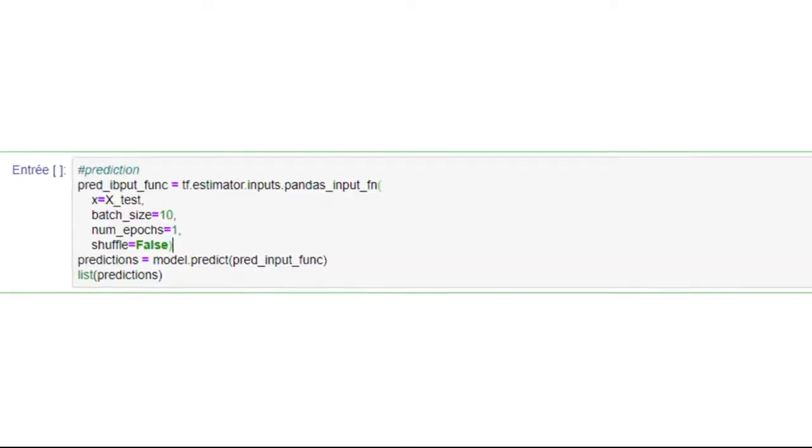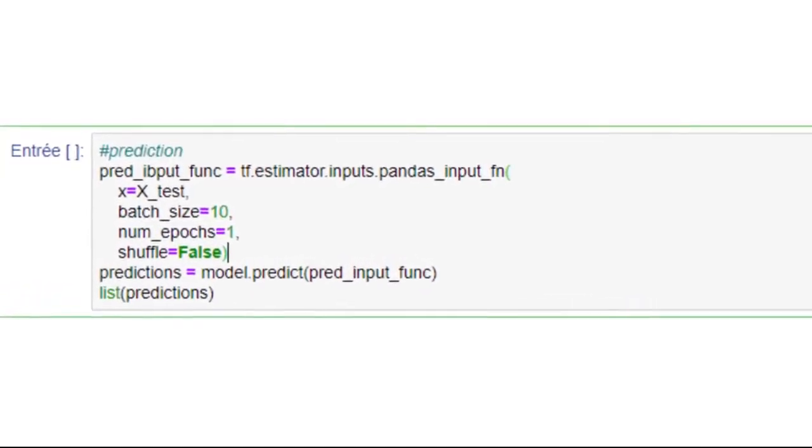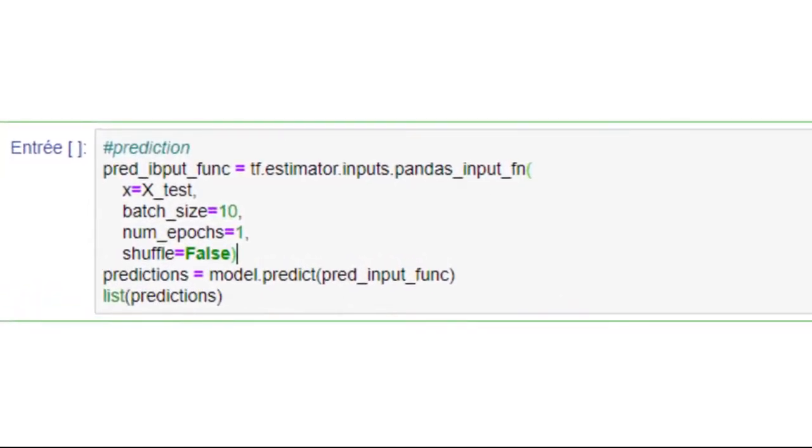After training the IA, we run a test on it. Not an exercise, but a real test. We are creating another function just like the first one, the input function. But this time we aren't giving it the results of the test because it's supposed to find it using the knowledge acquired from the exercises.